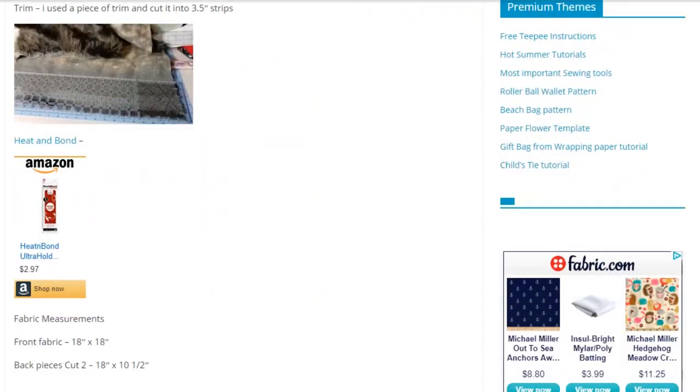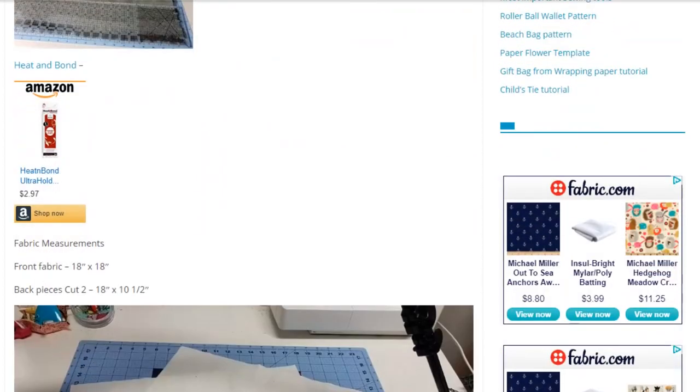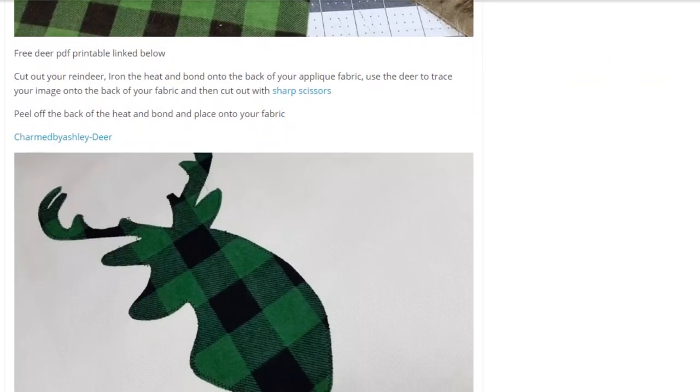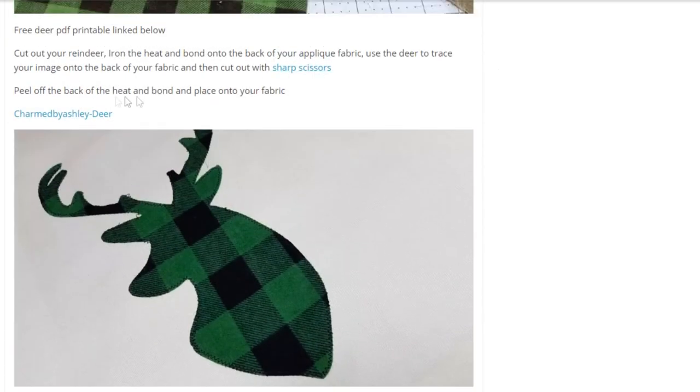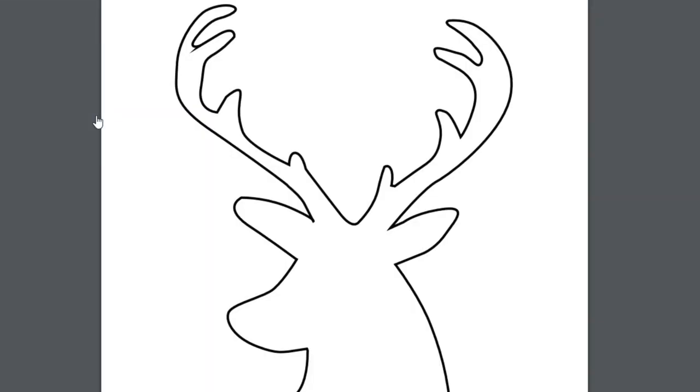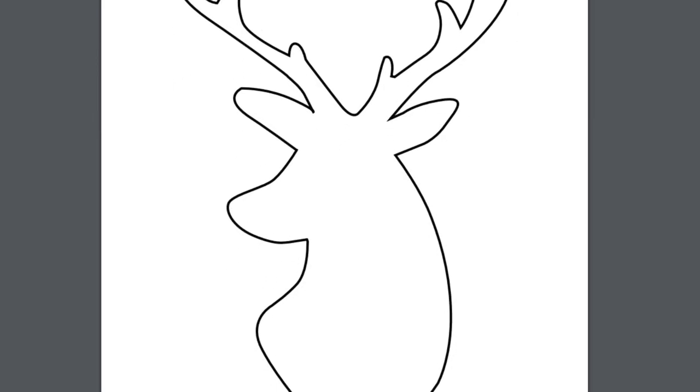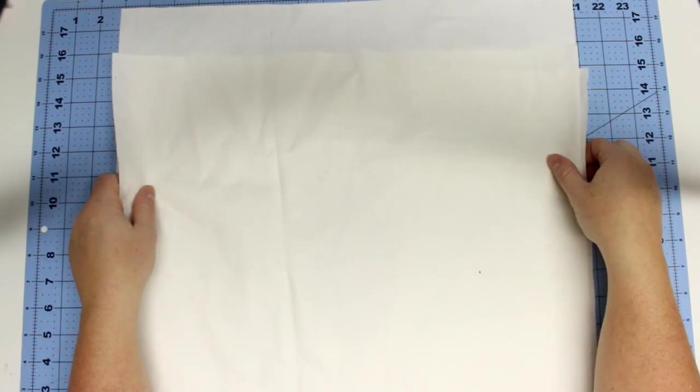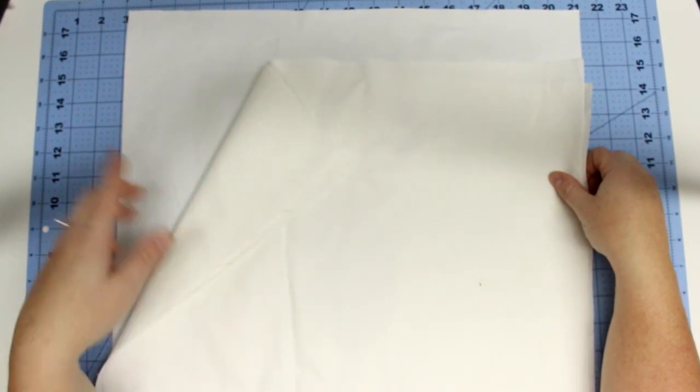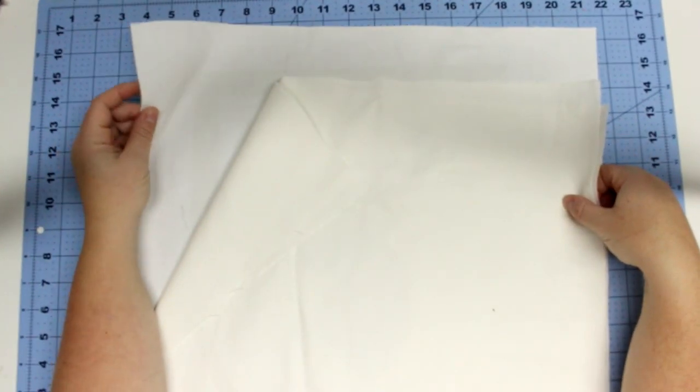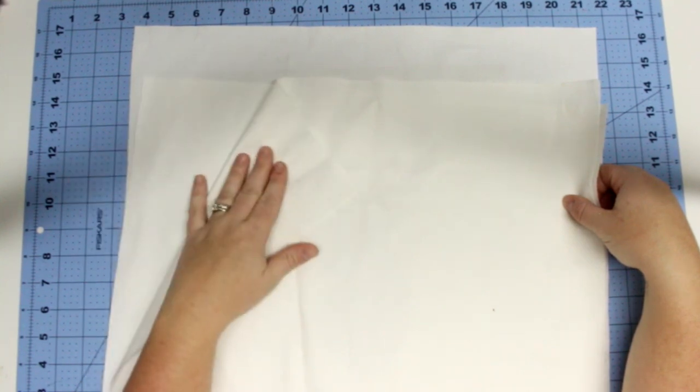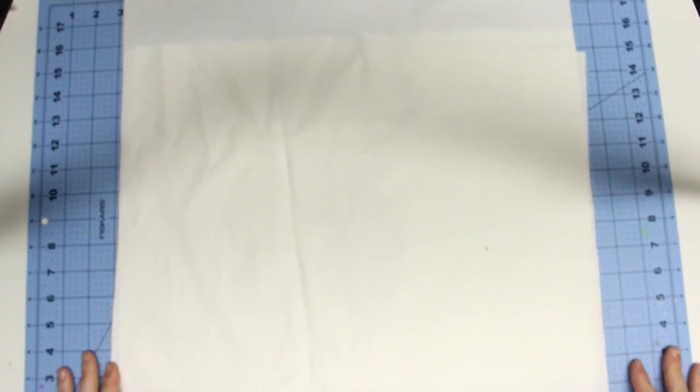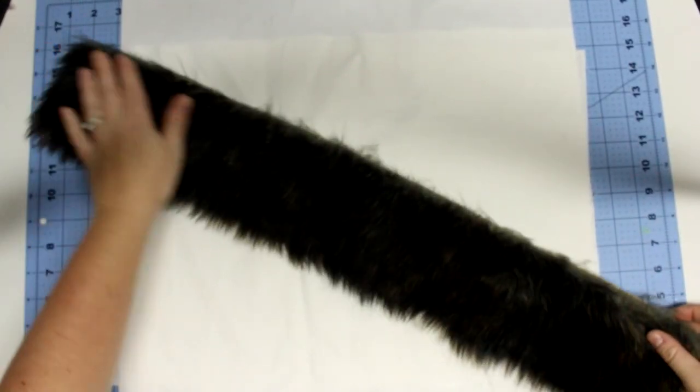Today we'll be making this beautiful fur-trimmed pillow with a reindeer applique on the front. All the information you need and the materials will be at the blog post link below, as well as the information icon, so you can download the PDF pattern for the reindeer if you choose to do the reindeer and get the measurements for your fabric. I'll be making a pillow cover, so if you want to make a pillow itself you could totally do that, but if you want to make the cover, you can just follow my exact instructions.